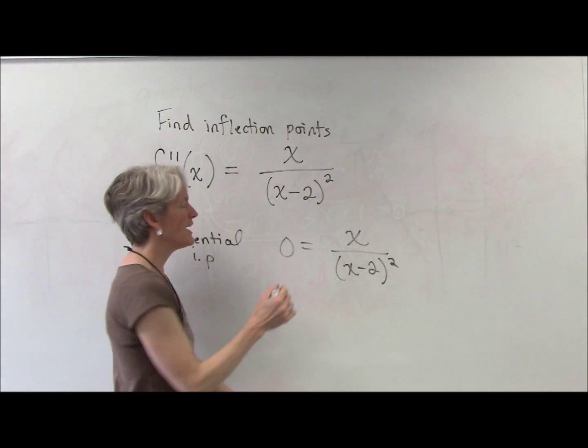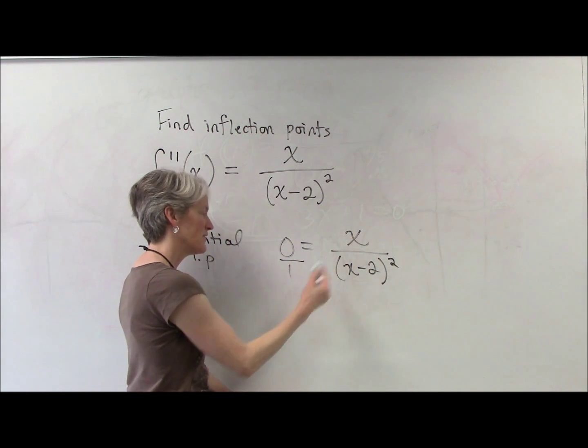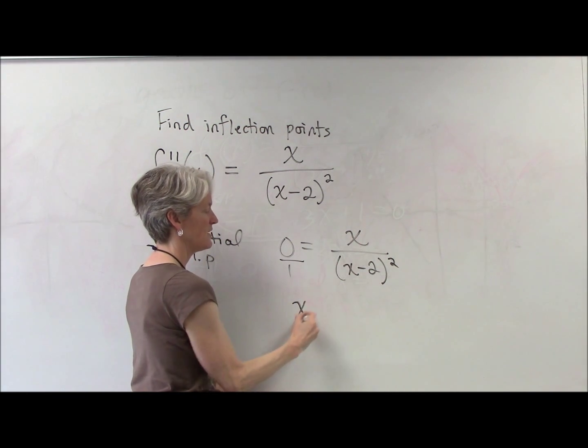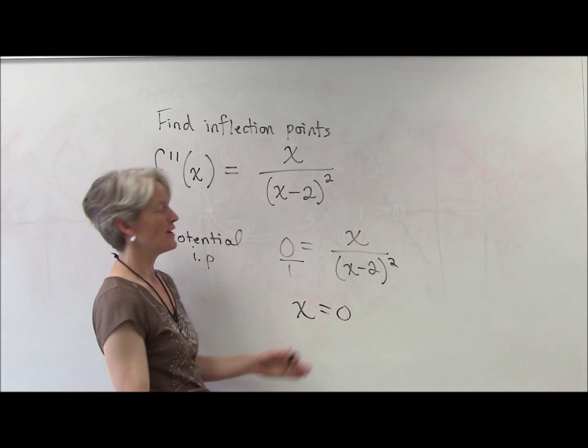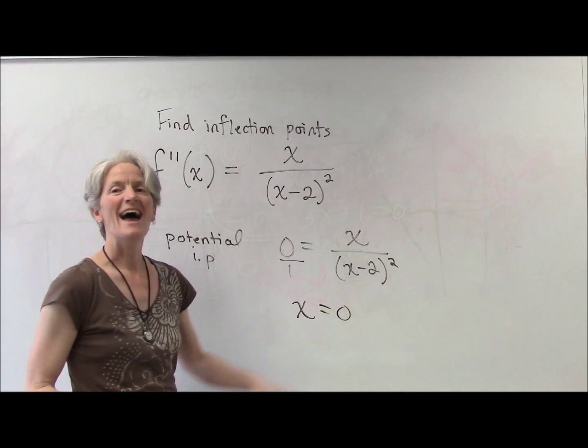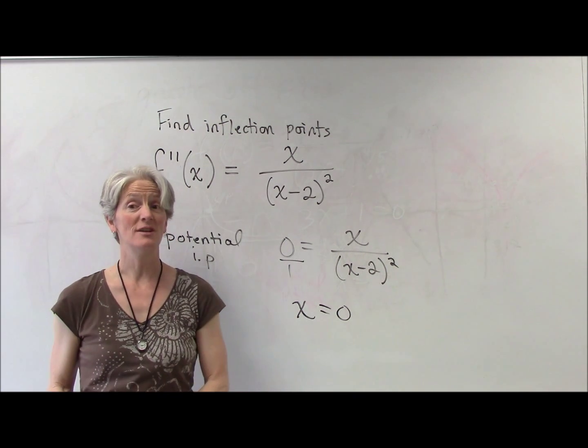But for you algebra mavens out there, I could put that over one, cross multiply, you get x times one is x, zero times, even the algebra gives me zero. Okay. That algebra stuff really works. It's amazing. Zero is a potential inflection point.